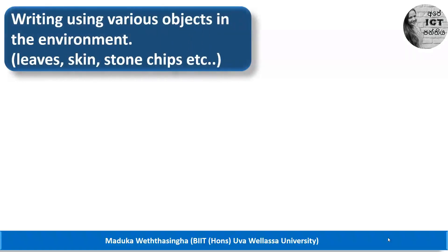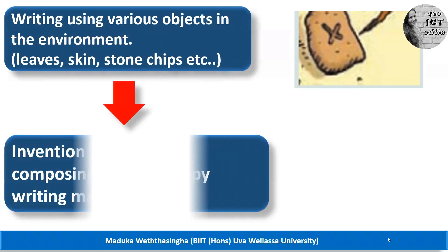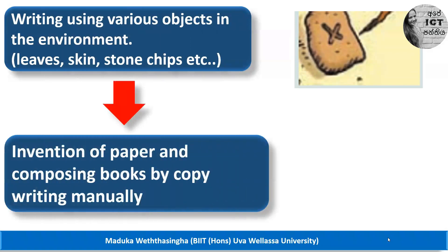In the first stage, our ancestors used various objects in the environment for writing — for example, leaves, animal skins, and stone chips. In the second stage, they invented paper, and books were composed manually.